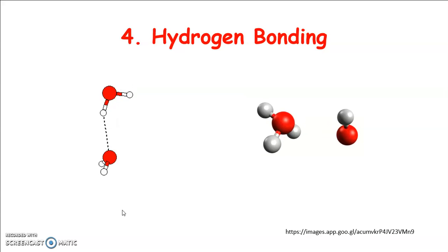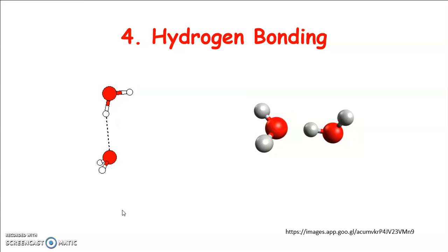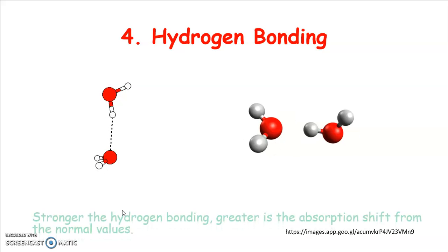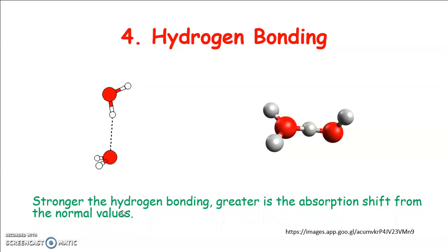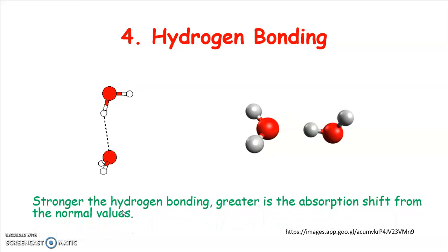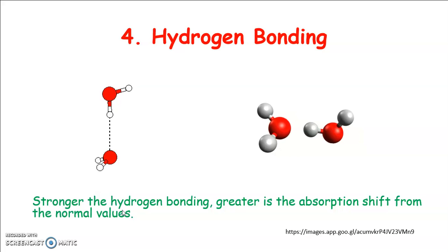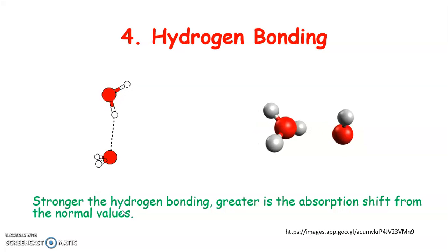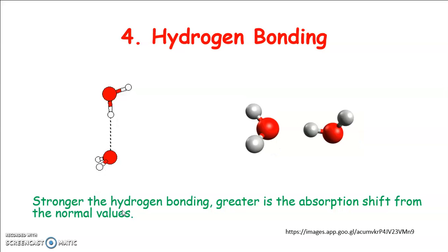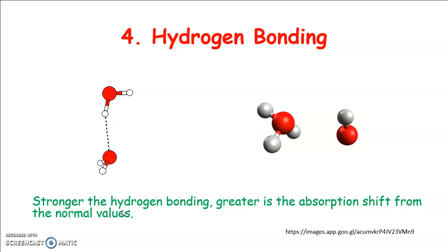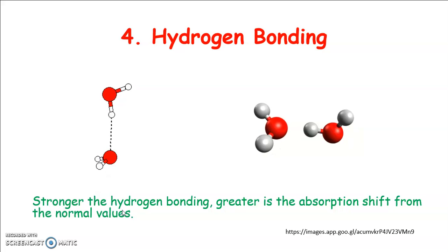The presence of hydrogen bonding changes the position and shape of an infrared absorption band. The stronger the hydrogen bonding, the greater is the absorption shift from the normal values. The OH-stretching bonds move to lower frequency with increased intensity and band widening.